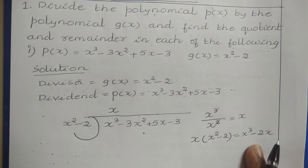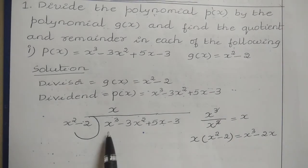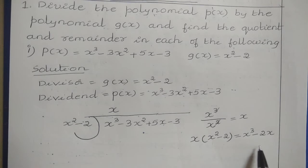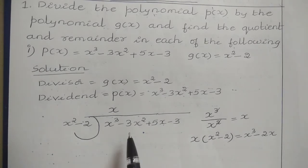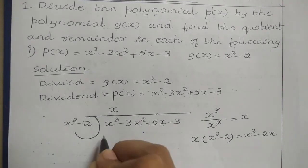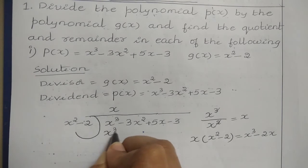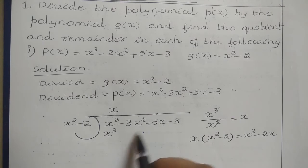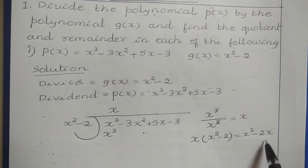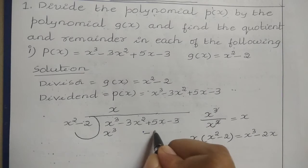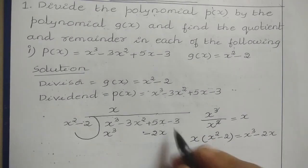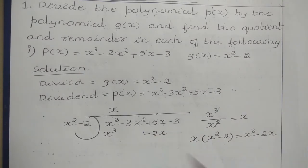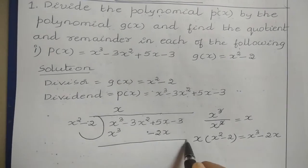Write this value under the dividend, aligning each term under its respective degree term. We have four terms in the dividend but only two terms in this product. So write X cubed under the X cubed term, and since there is no X squared term in the product, write minus 2X directly under the X degree term.